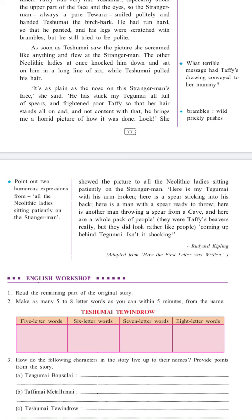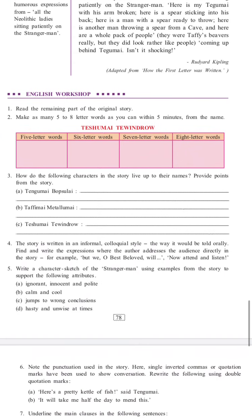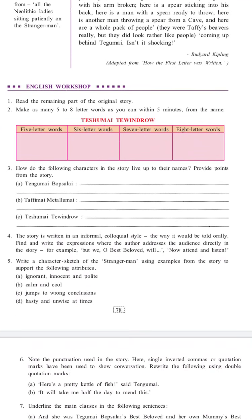English Workshop. Question 1: Read the remaining part of the original story. Question 2: Make as many five to eight letter words as you can within five minutes from the name 'Teshumai Tevindrov' — five letter words, six letter words, seven letter words, and eight letter words. Question 3: How do the following characters in the story live up to their names? Provide points from the story: Tegumai Bobsulai, Tafimai Metelumai, Teshumai Tevindrov.